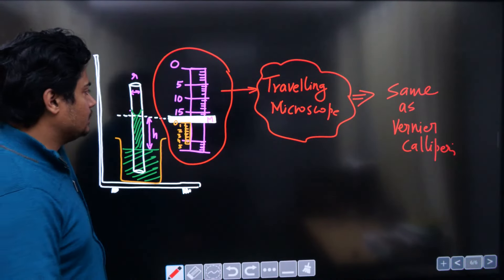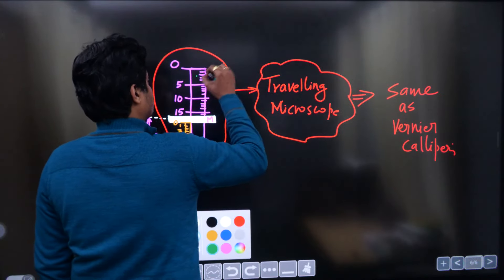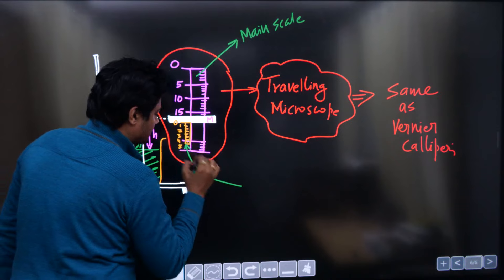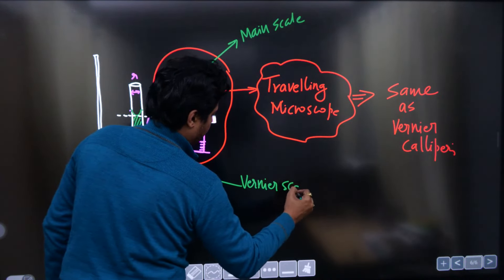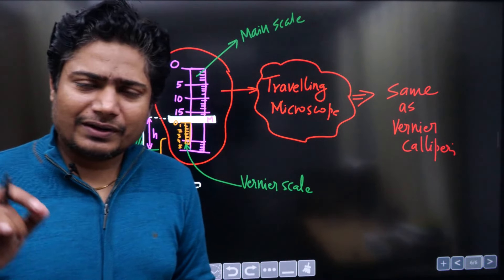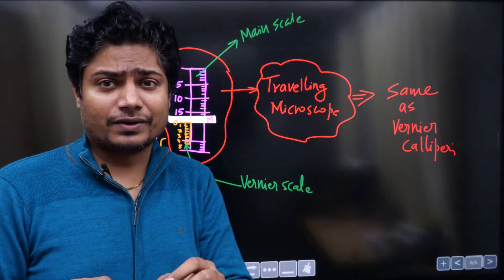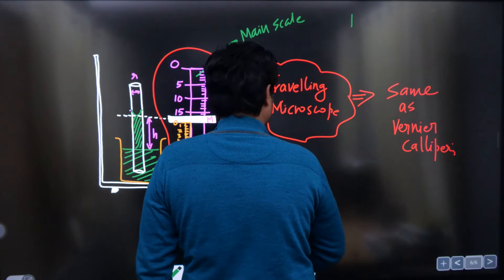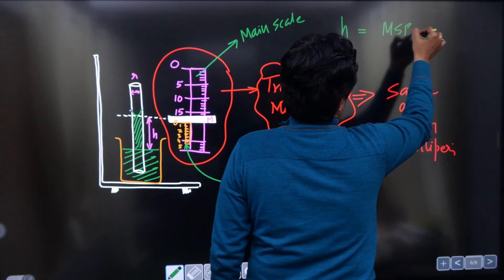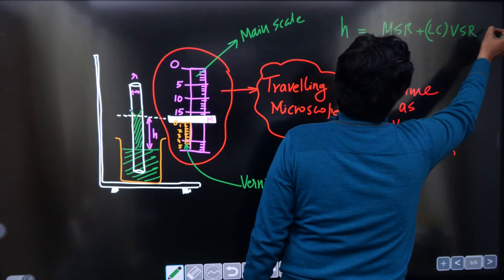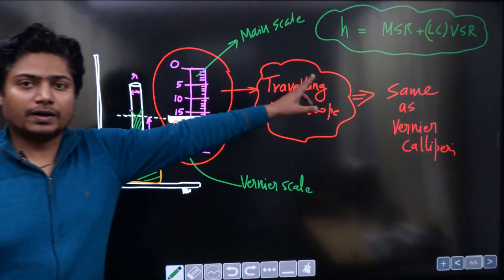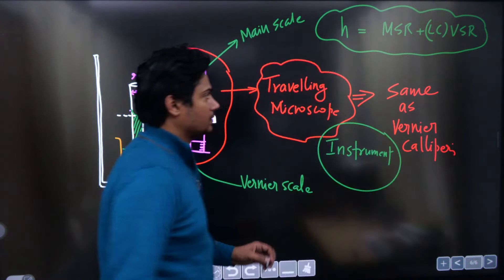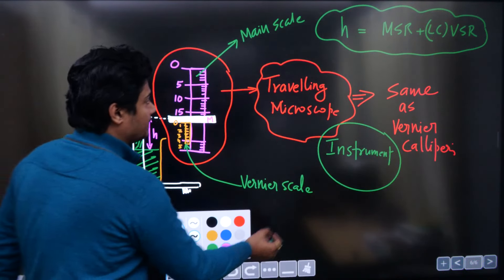Don't worry about the name 'traveling microscope' — it works just like a vernier caliper. You have a main scale and a vernier scale. The height h is written as: h = main scale reading + (least count × vernier scale reading). That is exactly how you read the instrument.